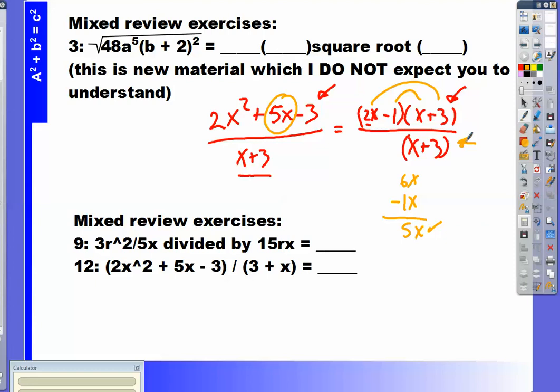Well, what is x plus 3 divided by x plus 3? That's just 1 now, isn't it? Anything divided by itself is 1. So, that means I'm just left with 2x minus 1. That's it. All right.